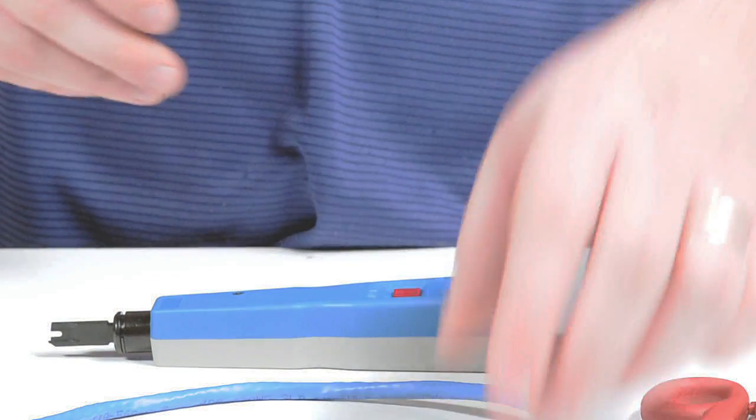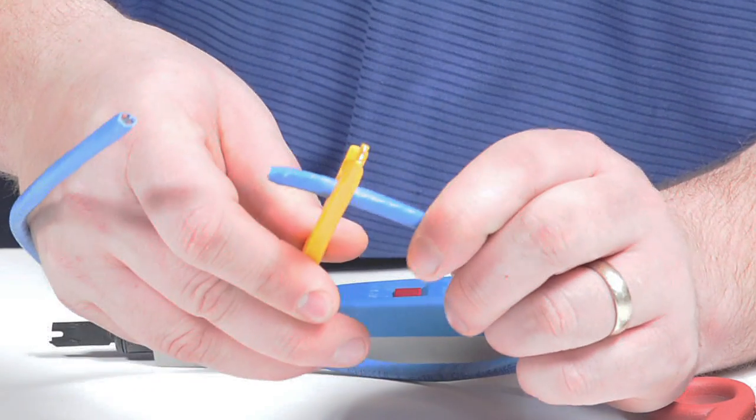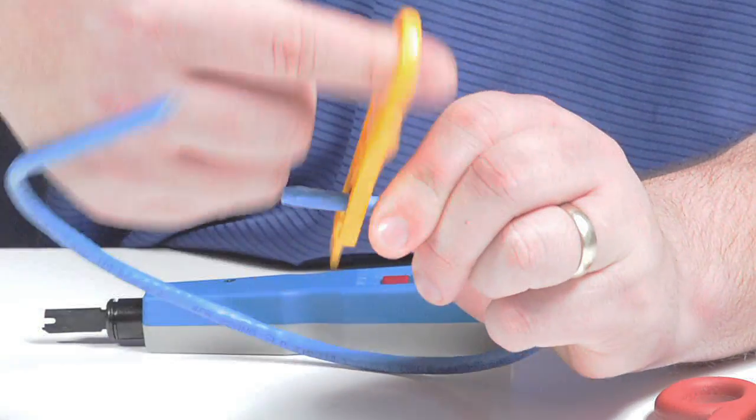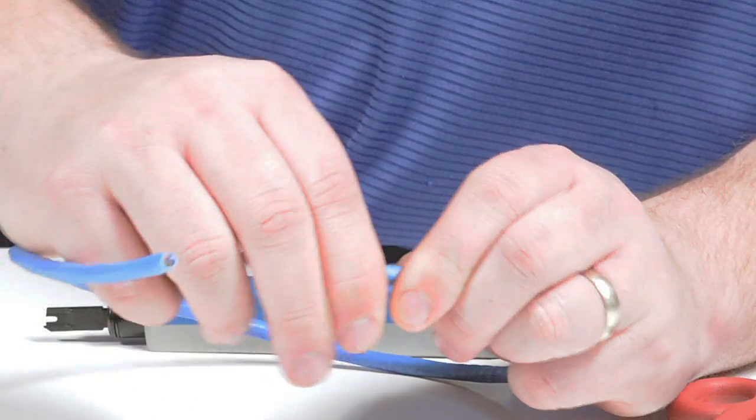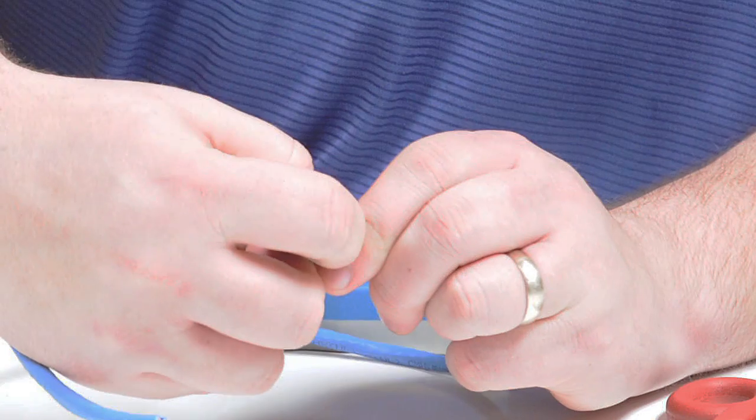The first step is to strip back the jacket of the cable. Simply rotate the strip tool around the outside of the jacket. This slices it and makes it easy to pull off.